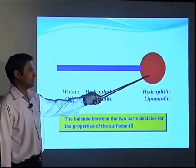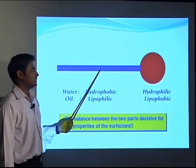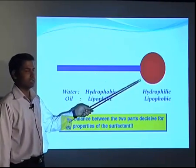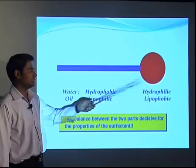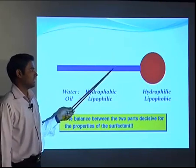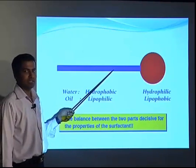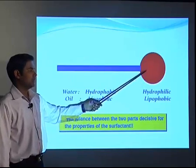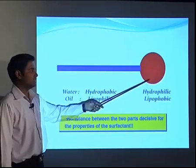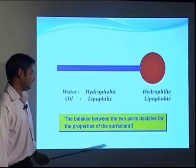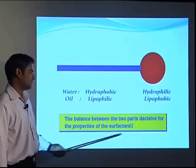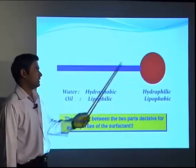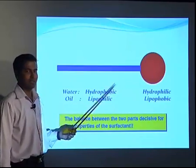The head group is water soluble, whereas the tail group is water insoluble. When the molecule dissolves in water, the head group has affinity toward water, whereas the hydrophobic tail group will not dissolve in water and will repel water molecules. This molecule mainly works at the surface level, which is why they are called surface active agents. The balance between the head and the tail determines the properties of the surfactant molecule.